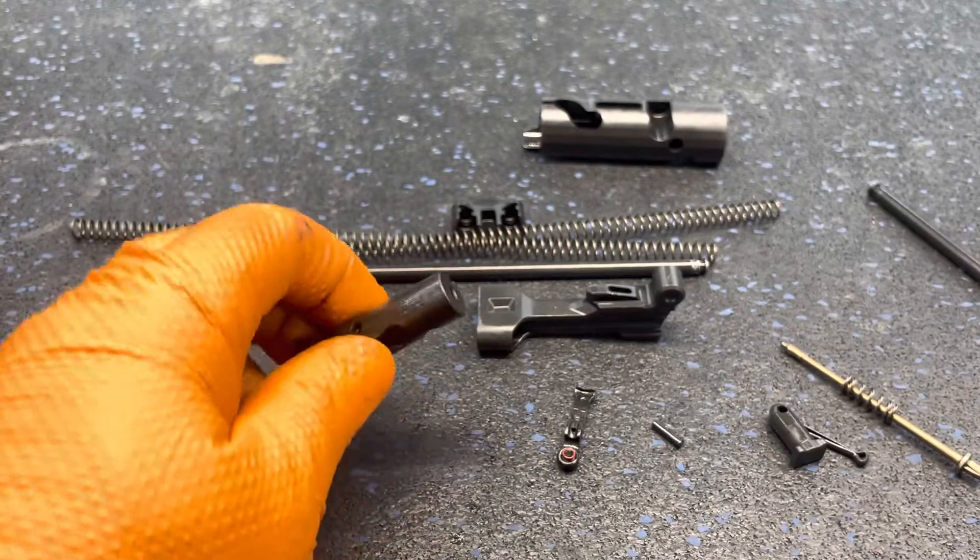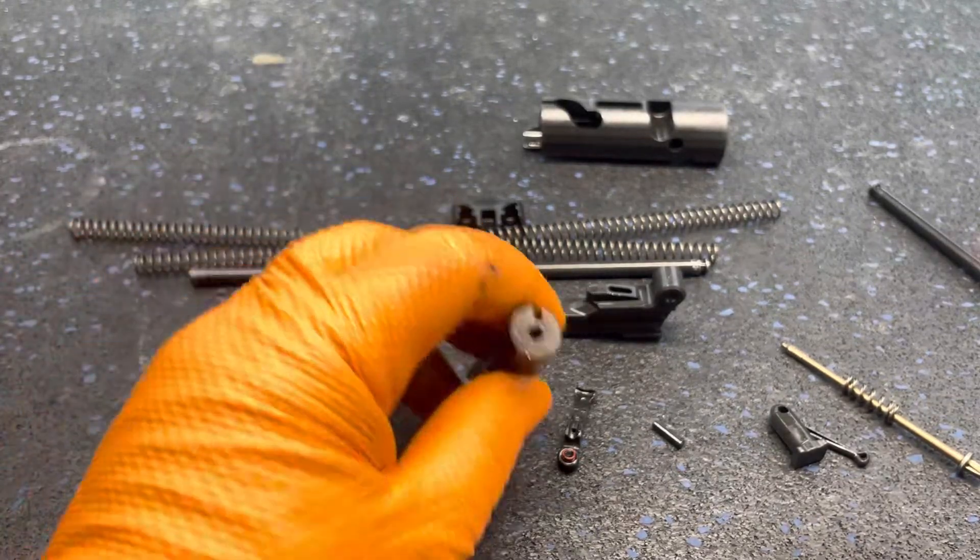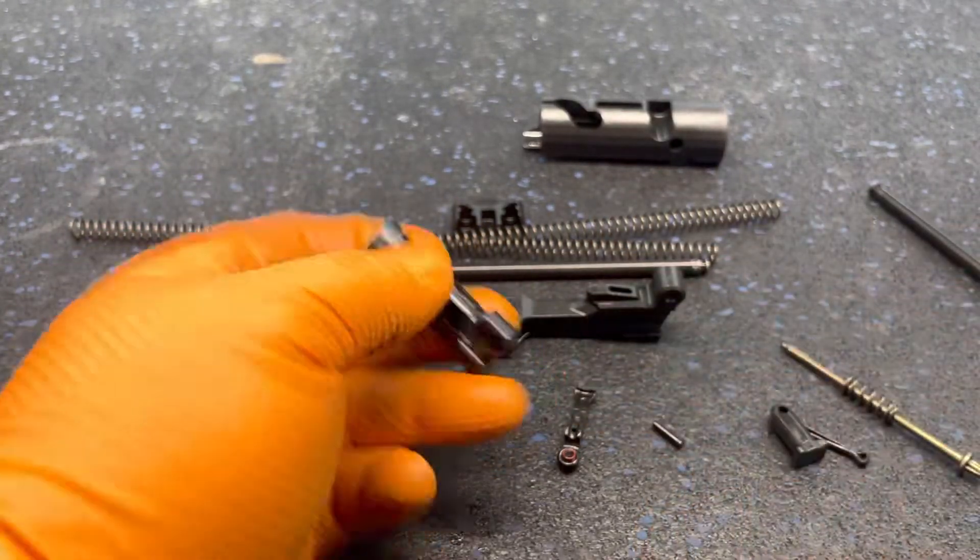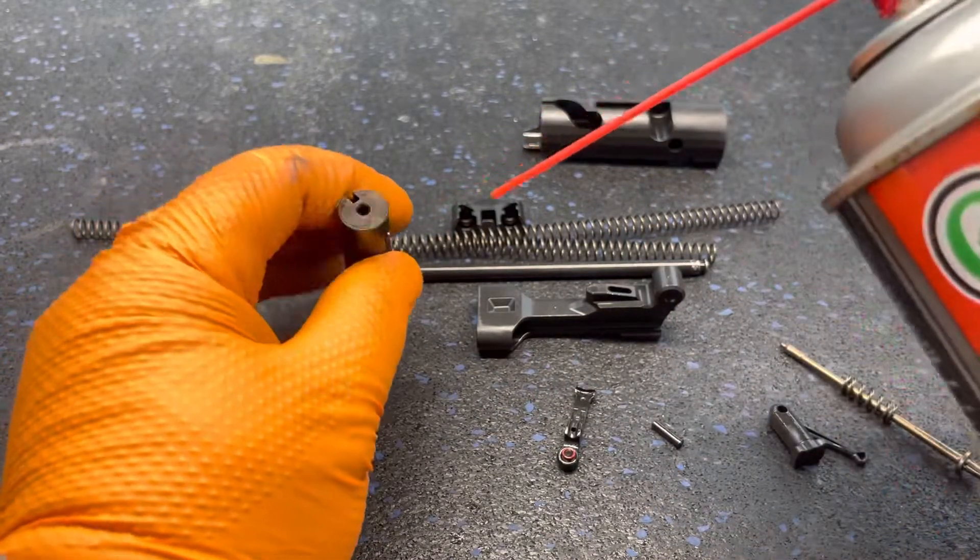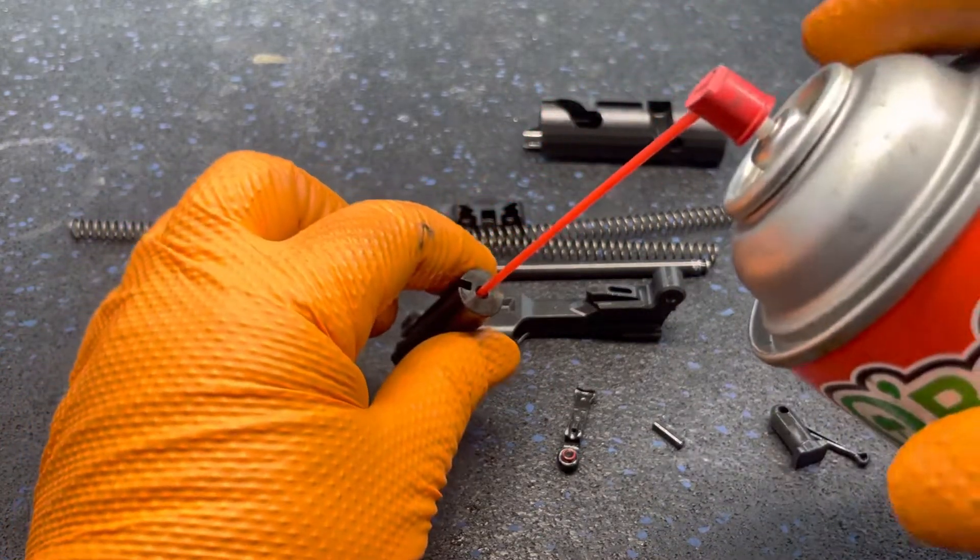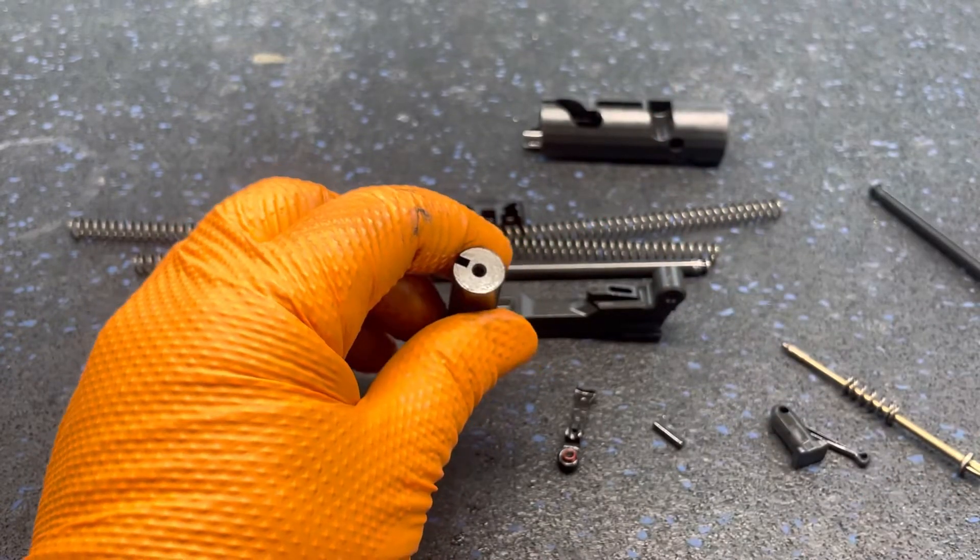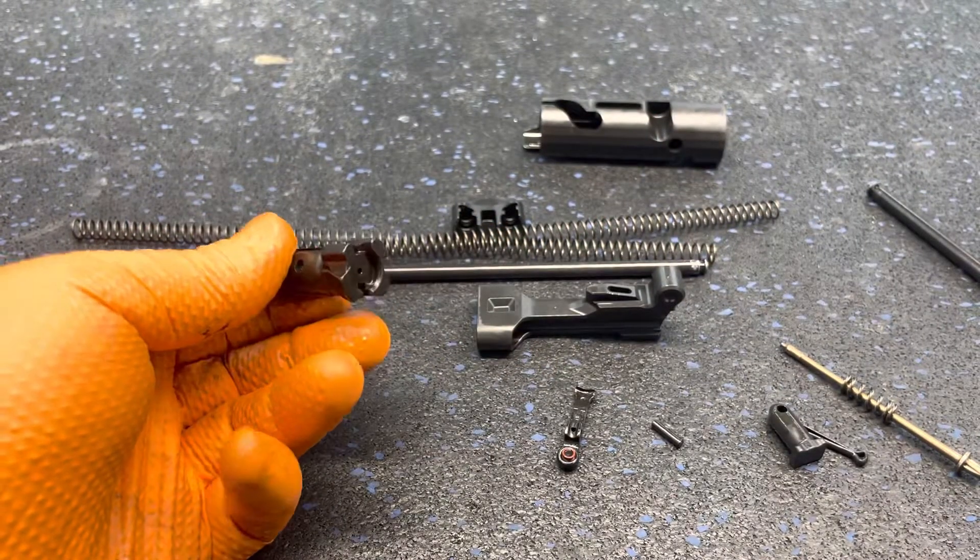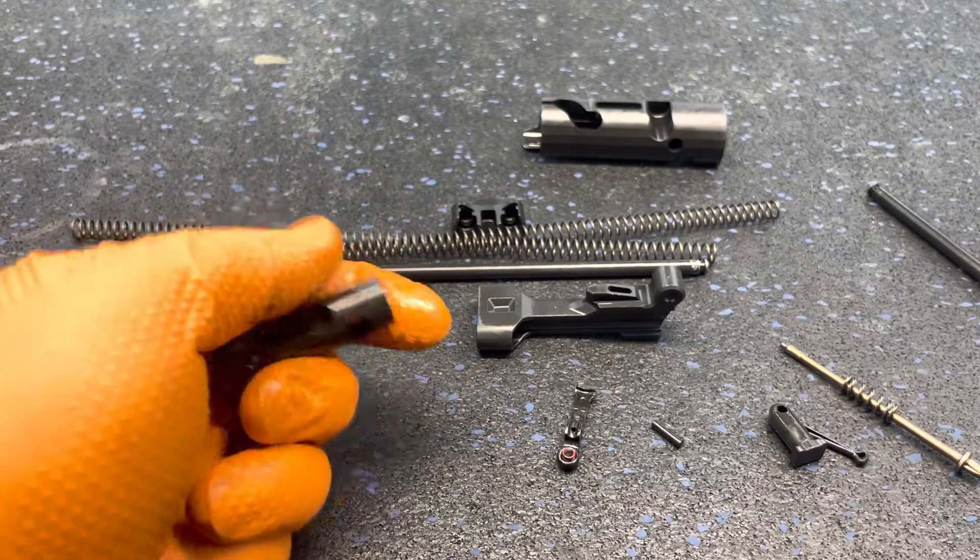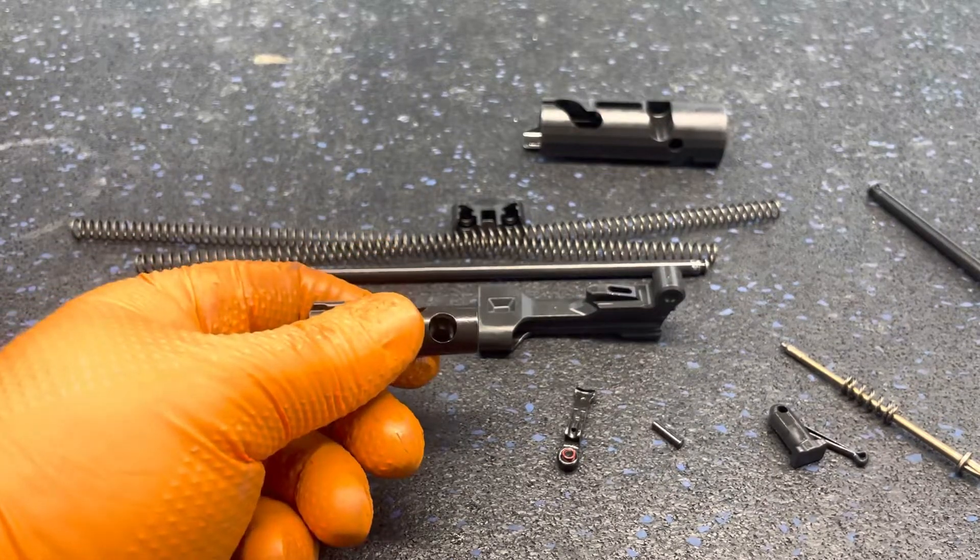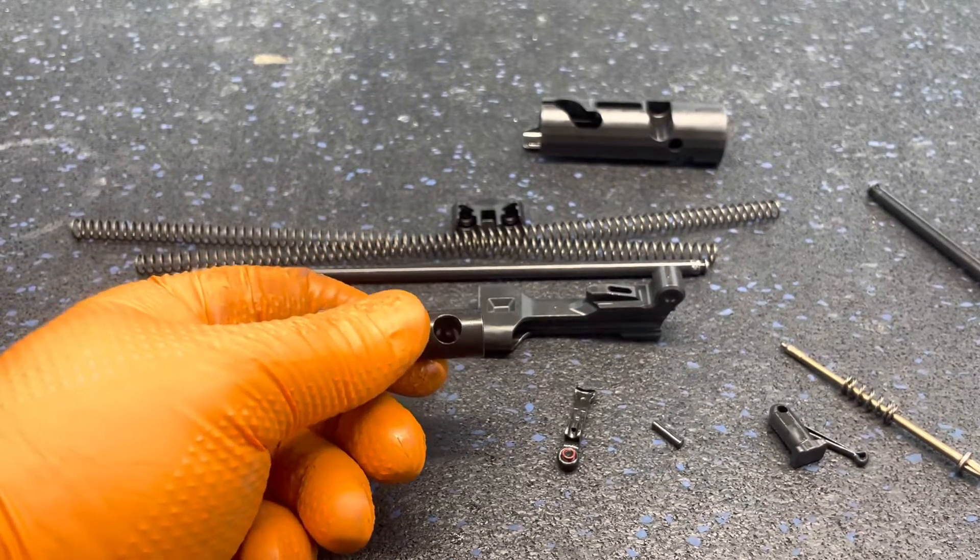When I'm cleaning this portion for the firing pin channel, I generally use carbon choke cleaner. The red straw fits perfectly inside, blasts everything out, and I follow that up with some compressed air through it. If you don't have compressed air, you can get those little cans like you use to clean out your keyboard.